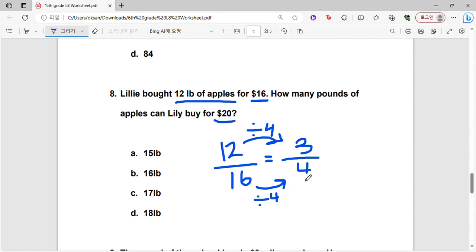So this means that 3 pounds of apples would cost $4. Now let's use this to find how many pounds of apples Lily can buy for $20. We can multiply by 5 to get $20, then we also multiply by 5 on the top. 5 times 3 is 15. So A is the correct answer.